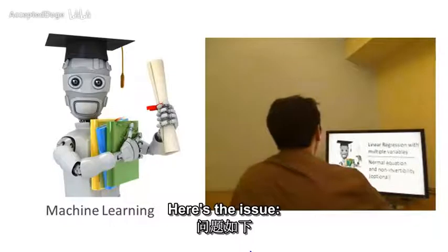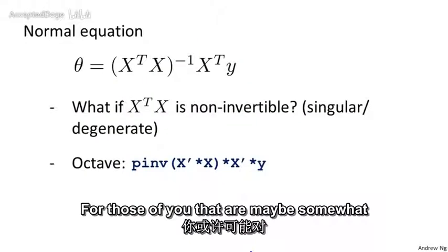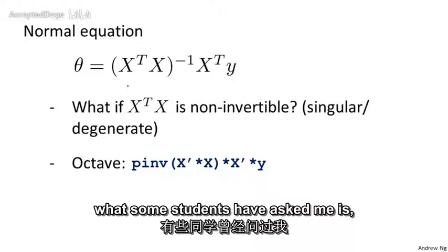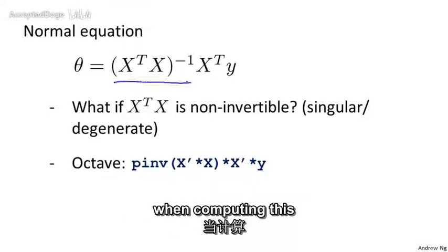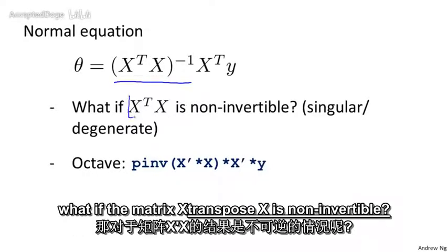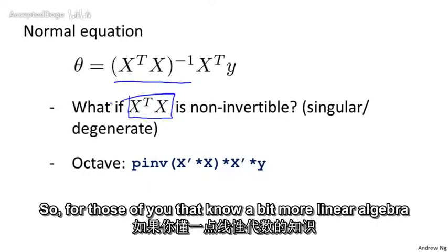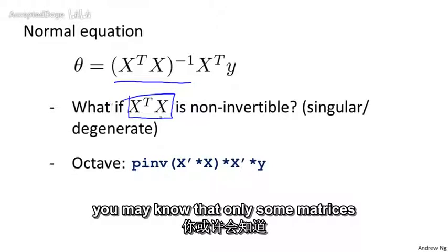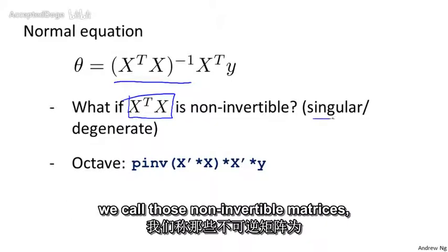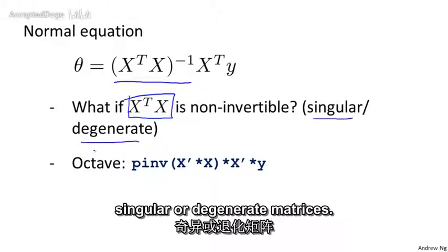Here's the issue. For those of you that are maybe somewhat more familiar with linear algebra, what some students have asked me is, when computing theta equals X transpose X inverse X transpose y, what if the matrix X transpose X is non-invertible? So for those of you that know a bit more linear algebra, you may know that only some matrices are invertible, and some matrices do not have an inverse. We call those non-invertible matrices singular or degenerate matrices.